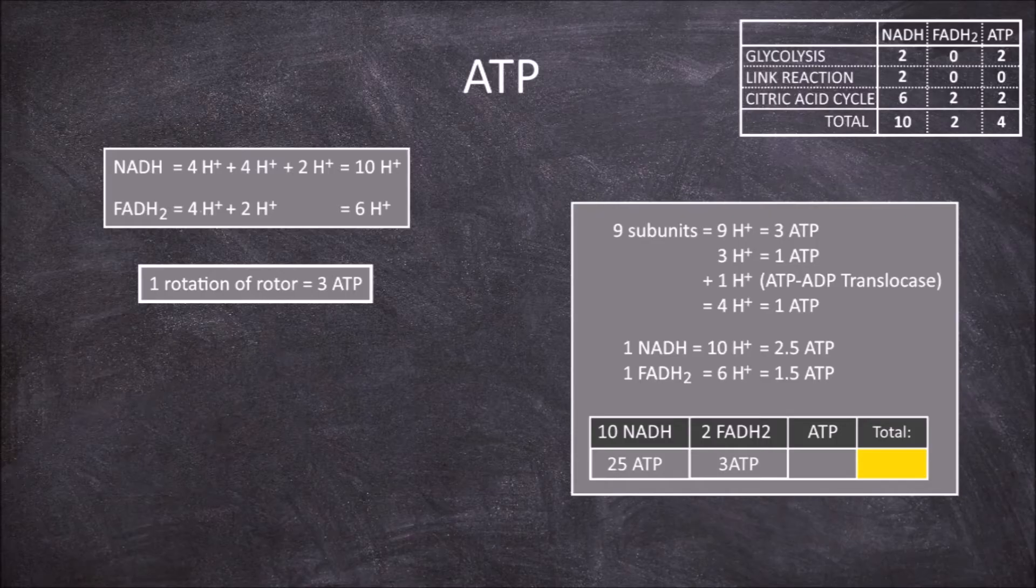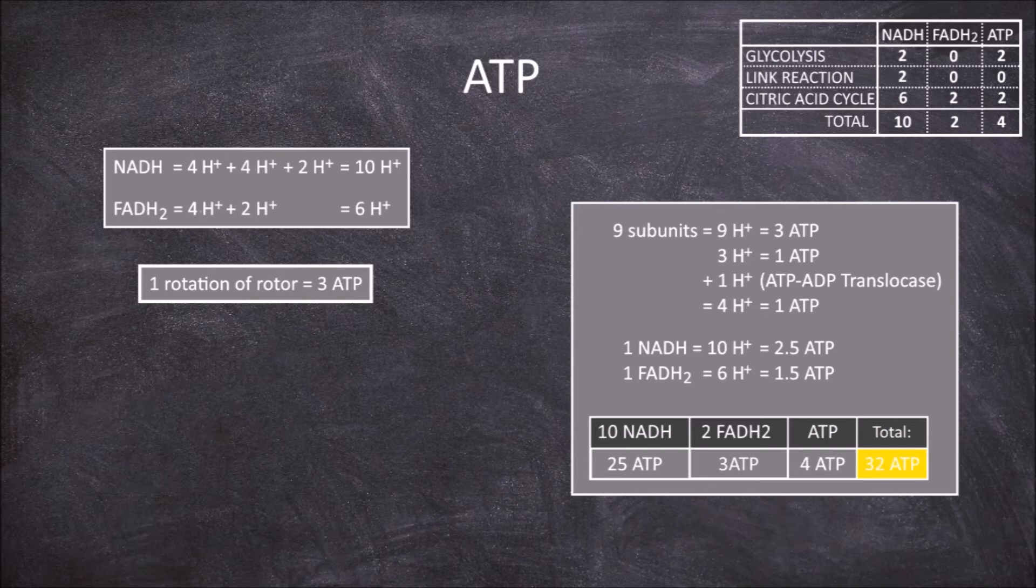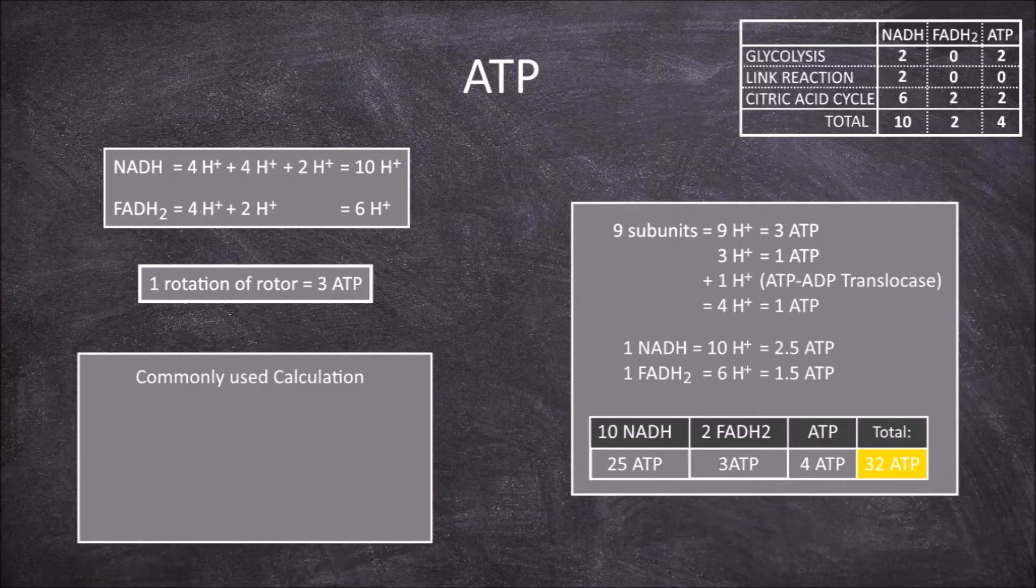Plus the 2 produced in glycolysis, and 2 in the citric acid cycle, you would get a total of 32 ATP per molecule of glucose.